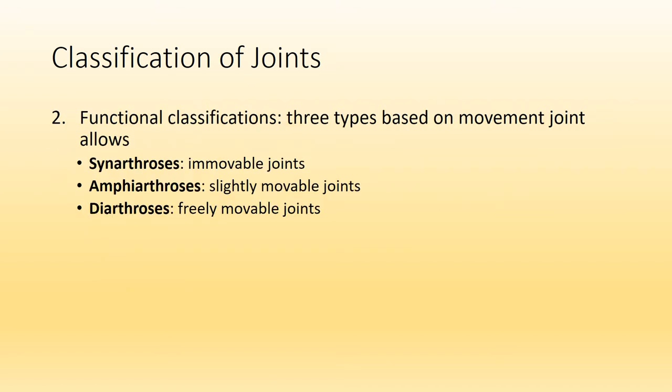The other way we are able to classify joints is based on its function, or rather the degree of movement that joint allows. We have synarthroses, which are immovable joints — think of sutures or the joints binding the skull bones together. Amphiarthroses are slightly movable joints. And lastly, diarthroses are freely movable joints. Joints like the hip or the elbow are considered diarthroses because they are highly mobile.